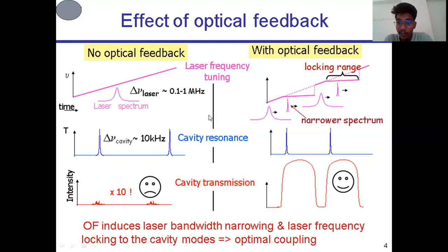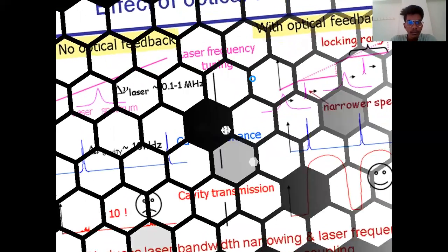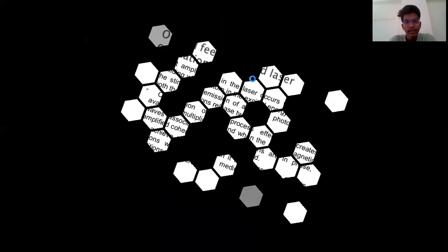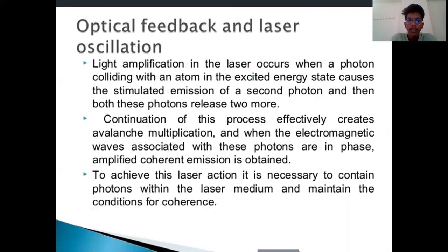With optical feedback, it will have a narrow spectrum. In cavity resonance, it will be high. The graph will be high with less strength and the cavity transmission will occur with spacing. Inducing laser bandwidth narrowing and laser frequency locking to the cavity mode is optimal coupling.